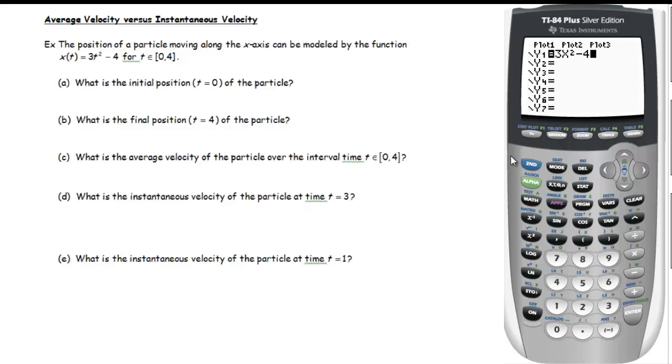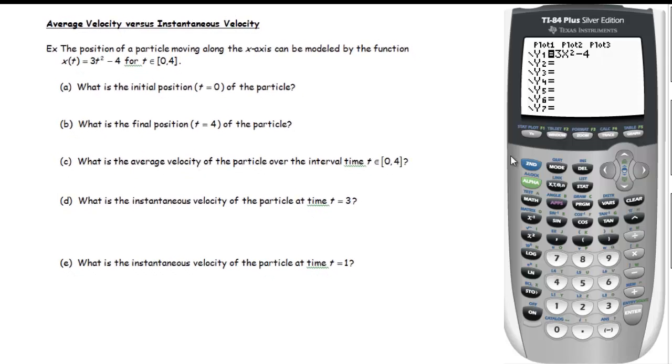If we want to know the position of the particle at t equals 0, that's simple. You just plug in 0 for t. So x of 0 is 3 times 0 squared minus 4, which is negative 4. So if we were to draw this situation up here on the right, here's a number line. And our particle is moving, and it looks like when t is 0, it's at negative 4. So it looks like our particle starts here.